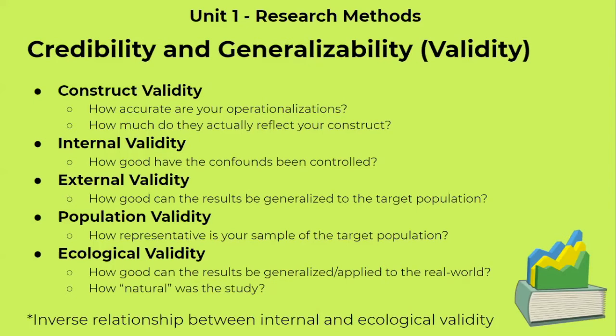This brings us to the inverse relationship between internal and ecological validity. Internal validity refers to how stringent the controls are — how well variables are controlled and how low confounds are. Ecological validity refers to how natural the experiment is and whether it represents the actual environment. If ecological validity is high, internal validity is low. If internal validity is high, ecological validity is low. Vice versa.